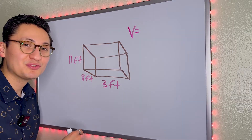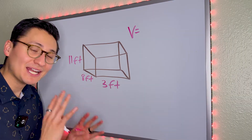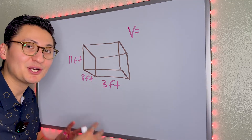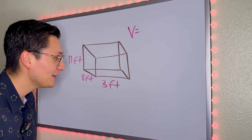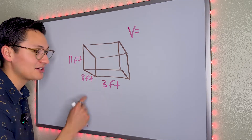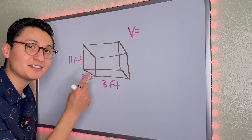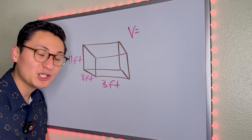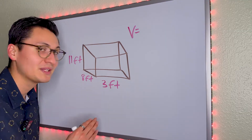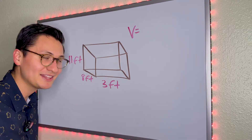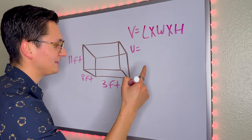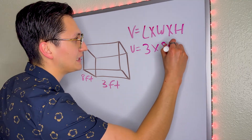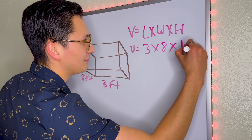For this shape, we're going to find the volume. Can you tell me what shape this is? Is this a cube or a rectangular prism? It is not a cube — because the sides are not equal. If all the sides were equal, it would be a cube. But since they are not, it is a rectangular prism. The length is 3 feet, the width is 8 feet, and the height is 11 feet.